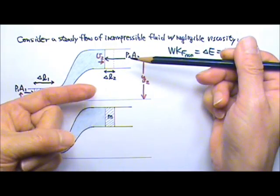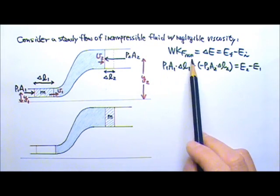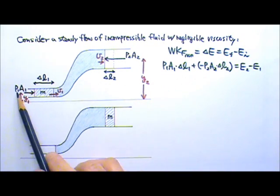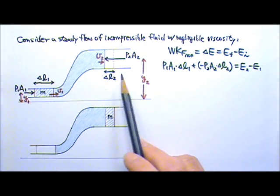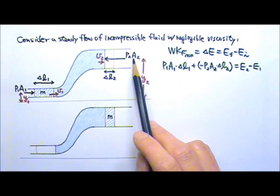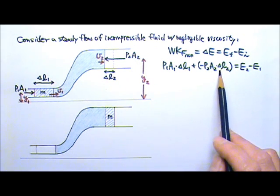So this force does negative work. The total work done by the non-conservative forces equals P1A1 times delta L1 plus the negative work done by this force, P2A2 times delta L2.